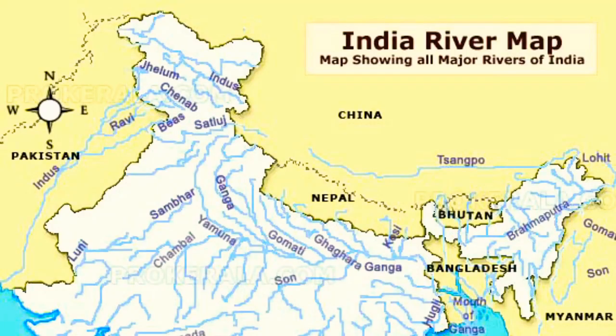We are looking at the Indian River System. Let's see the 10 river systems we will cover: 1st is Indus, 2nd is Brahmaputra, 3rd is Ganga, 4th is Yamuna, 5th is Narmada, 6th is Tapti, 7th is Godavari, 8th is Krishna, 9th is Kaveri, and 10th is Betwa river system.